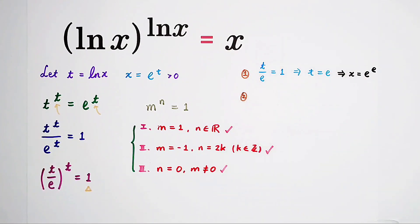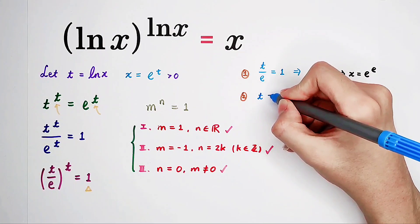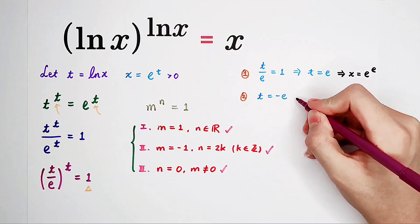Then, second case. In the second case, that means m is negative 1. So what does it mean? t over e is negative 1. That means t is negative e. Well, negative e is not an even number. In this case, there aren't any real solutions. There are maybe imaginary solutions. No real solutions.